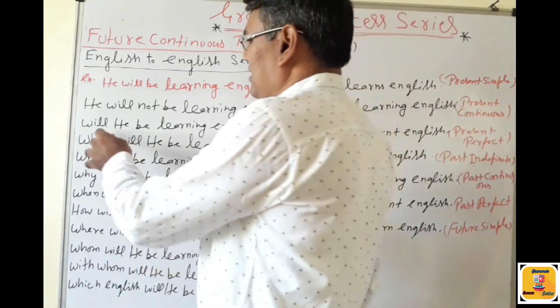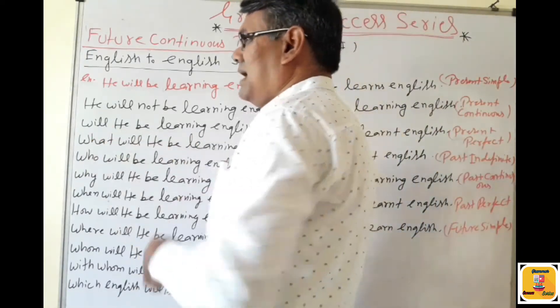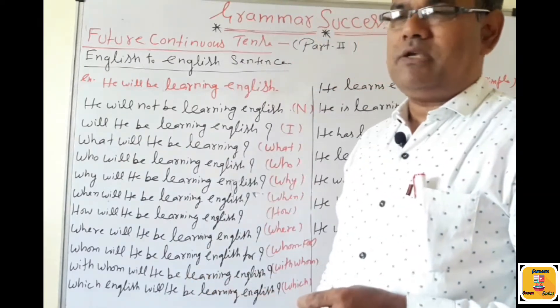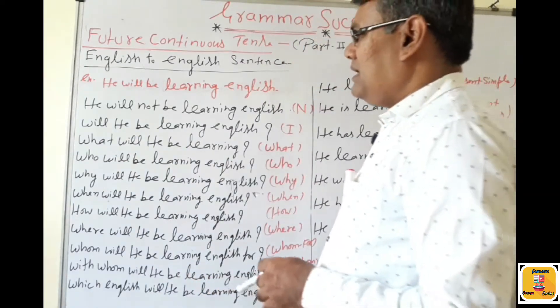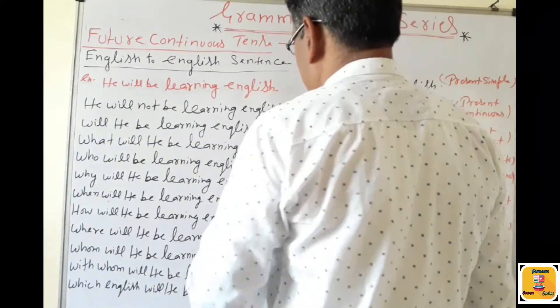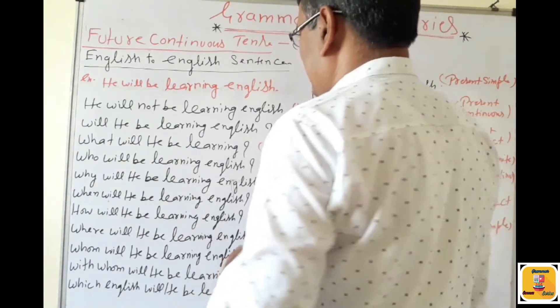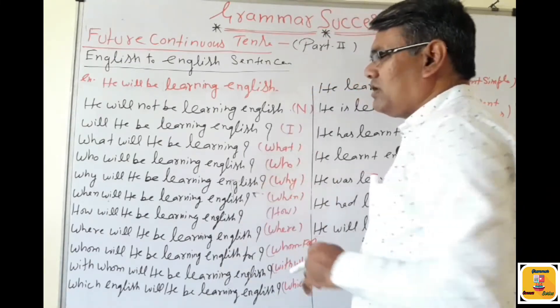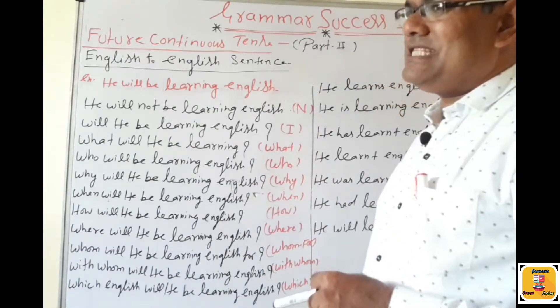Helping verb is 'Will.' Subject: 'he.' Be. 'Will he be learning English?' — question mark. Next, use of 'What' and 'Why.'